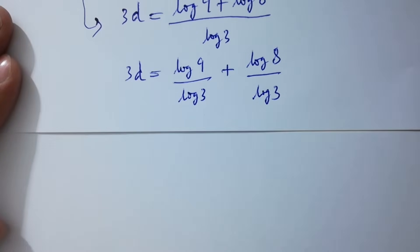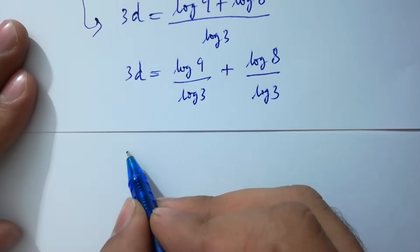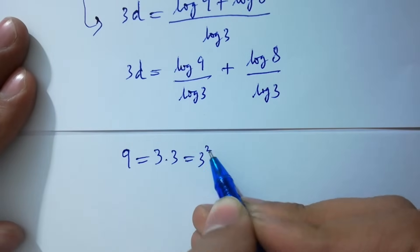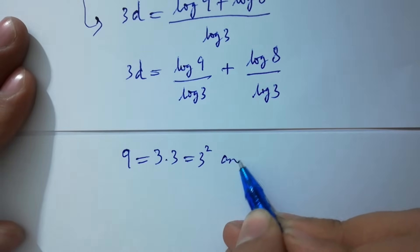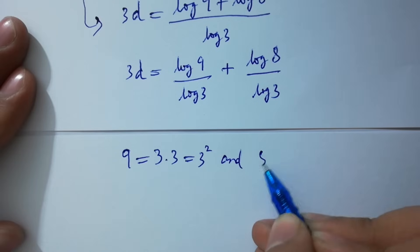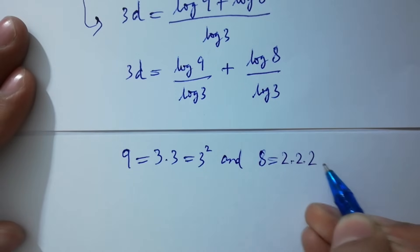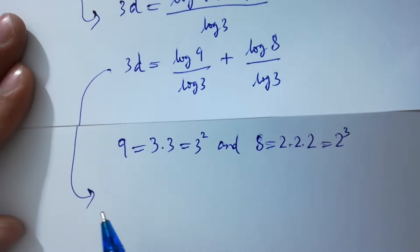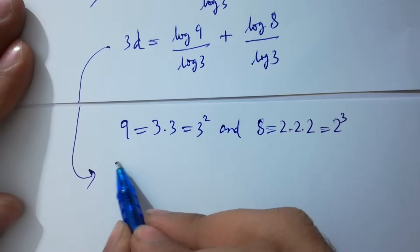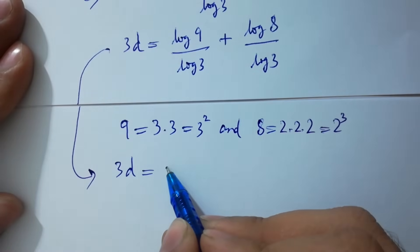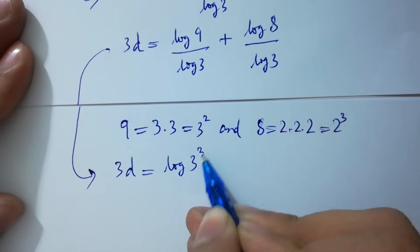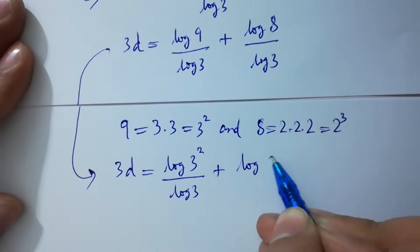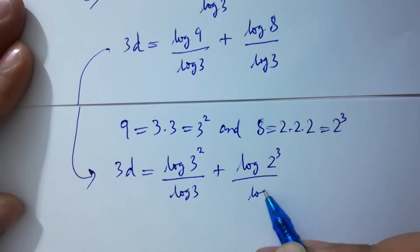So 3d equals log 9 over log 3 plus log 8 over log 3. Since 9 equals 3 squared and 8 equals 2 cubed, we get 3d equals log(3²) over log 3 plus log(2³) over log 3.